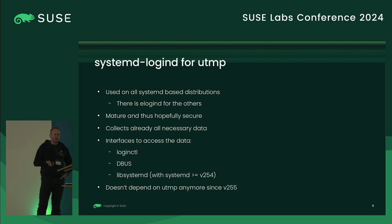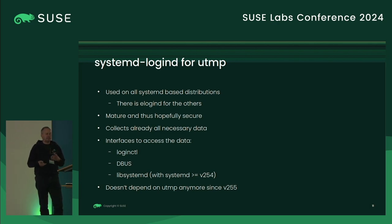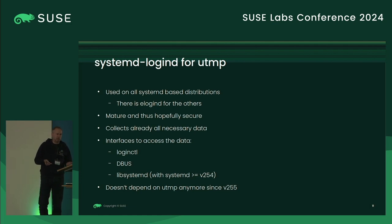For utmp, we decided to go with systemd-logind — that was a proposal from Ludwig. The problem with utmp is not only the 32-bit time_t, but many more problems, and they are also security-relevant. The answer is always: you need a daemon, so we have logind running — use it.